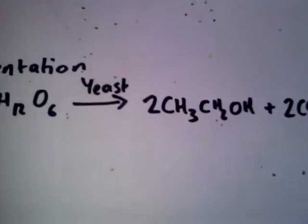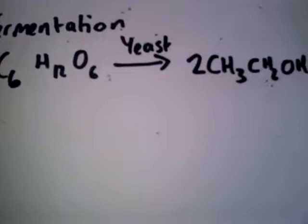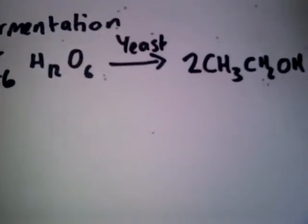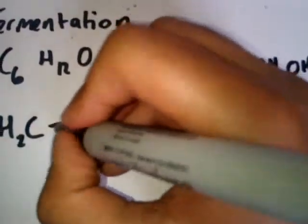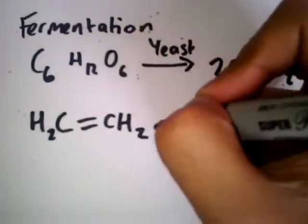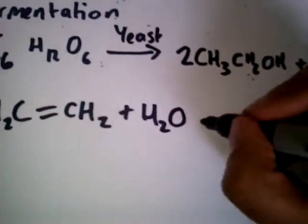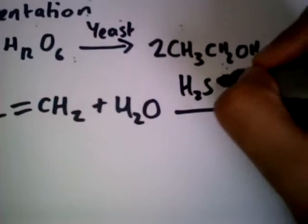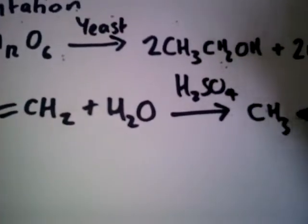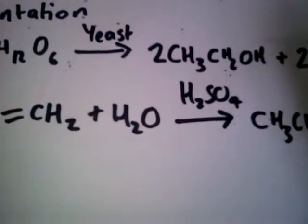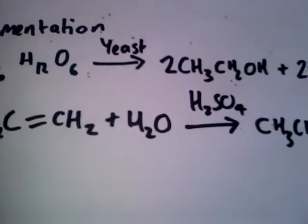Another one is acid-catalyzed hydration of ethene. So you have ethene here, plus water, and sulfuric acid will be the catalyst. H2SO4 gives CH3CH2OH. So those are two important mechanisms for the manufacture of alcohols.